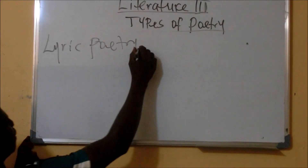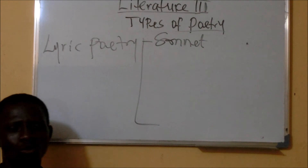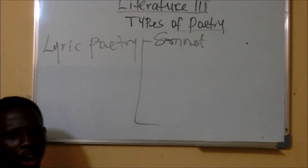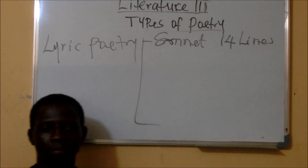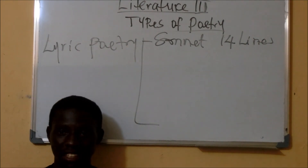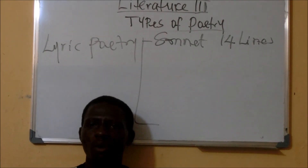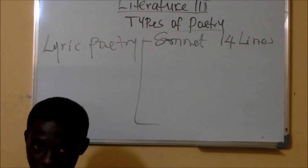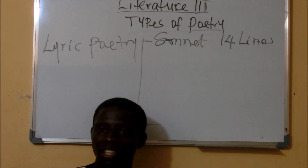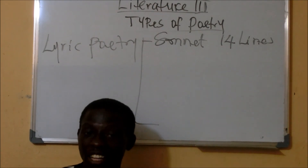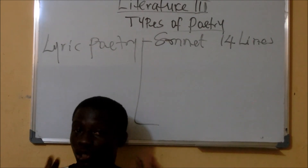Under lyric poetry, we have what we call sonnets. Sonnets is a poem of 14 lines. We have what we call the English sonnet, and we also have what we call the Shakespearean sonnet. The Italian sonnet is quite different from the English sonnet, and the English sonnet is also different from the Shakespearean sonnet. So we have three sets of sonnets.